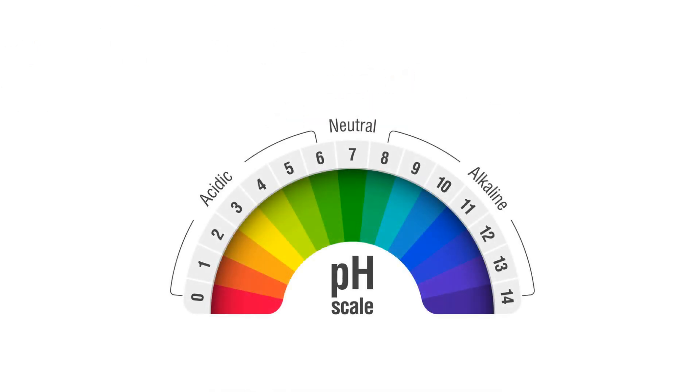Most bacteria grow best at a pH value near to 7, which means most bacteria are neutrophiles. Some bacteria can grow at a pH range between 3 and 4; these are called acidophiles. Alkaliphiles are the bacteria that can tolerate pH between 8 and 11.